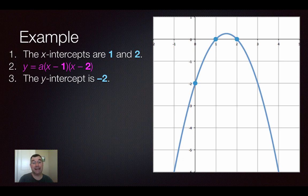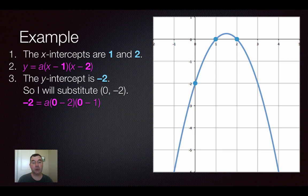So I know the y-intercept is negative 2, so what I do is I replace every x with 0 and every y with negative 2 in that magenta equation there. And what I get is that negative 2 equals a times 0 minus 2 times 0 minus 1.